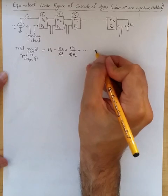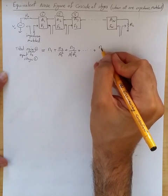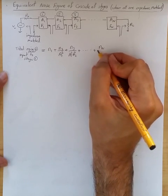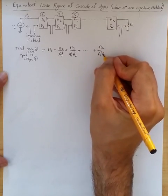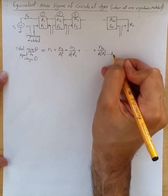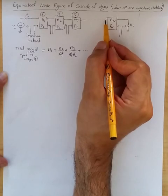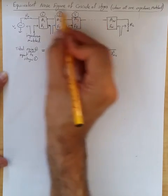And this continues for the noise of the last stage, which is the power of the noise generated by the last stage, which is N sub N, and then divide it by A1 squared, A2 squared, A N minus 1 squared, because now we are referring that noise from here to the input of stage 1.